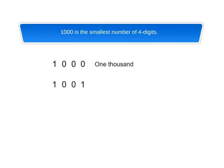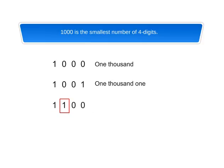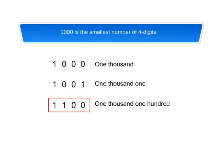1,0,0,1 stands for 1 thousand, 0 hundreds, 0 tens, and 1 one. It is read as 1,001. 1,1,0,0 stands for 1 thousand, 1 hundred, 0 tens, and 0 ones. It is read as 1,100.